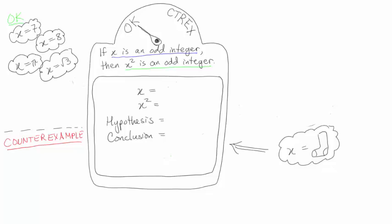Finally, we could try the sock. x equals sock, and x squared equals... well, sock squared doesn't make any sense since we haven't defined the meaning of squaring for socks. So the hypothesis is false. A sock is not an integer. And the conclusion is actually nonsense. But that's OK, too.